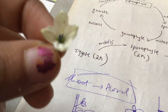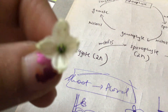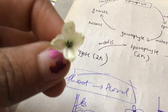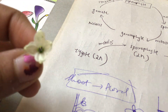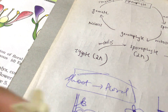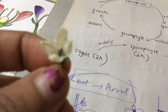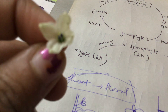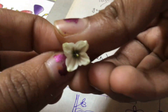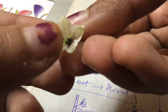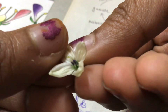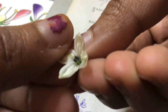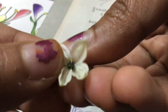Here's an example of an actinomorphic flower — this is a chilli flower. It is actinomorphic, having four different petals, and you can cut it in four different radial planes.